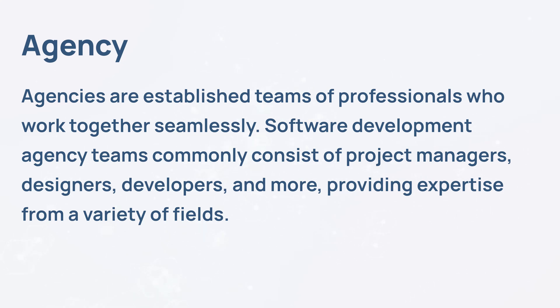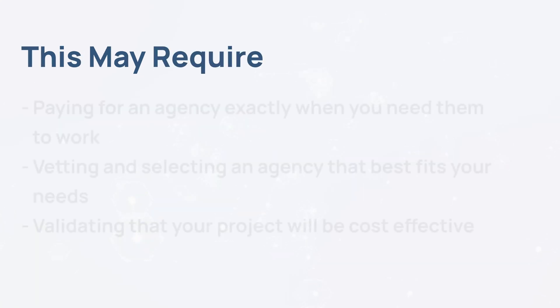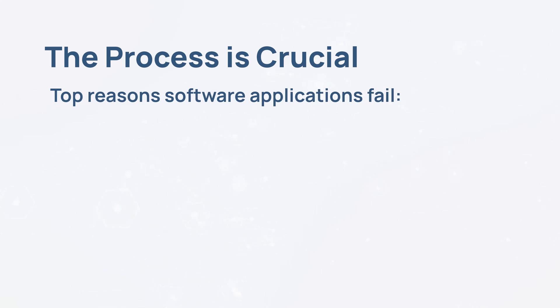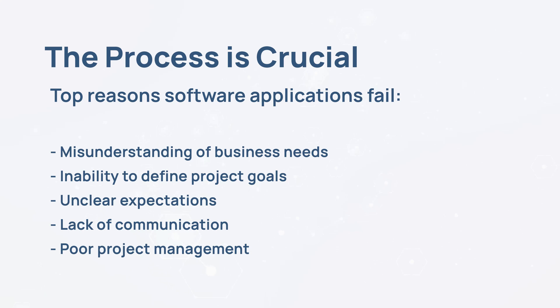Agencies are established teams of professionals who work together seamlessly. Software development agency teams commonly consist of project managers, designers, developers, and more, providing expertise from a variety of fields. Agencies can be hired exactly when you need them and offer long-term support at a lower cost to your business. Unlike internal teams, agencies already have processes in place. The process used by the team who builds your custom software is crucial — with a poor or incorrect process, custom software development can easily go wrong. A few reasons why some software applications fail may include misunderstanding of business needs, inability to define project goals, unclear expectations, lack of communication, and poor project management.